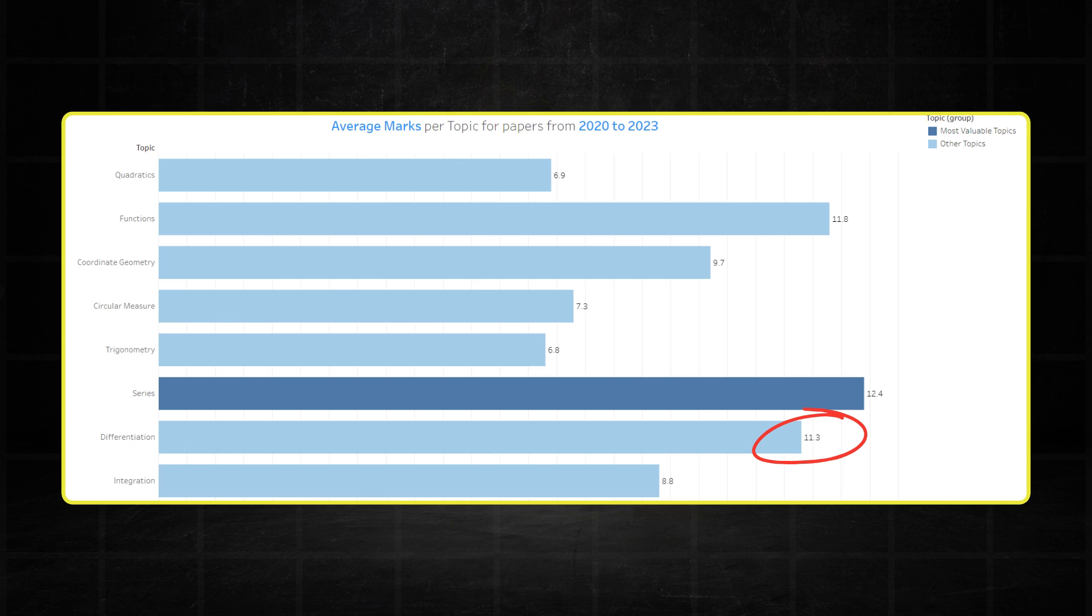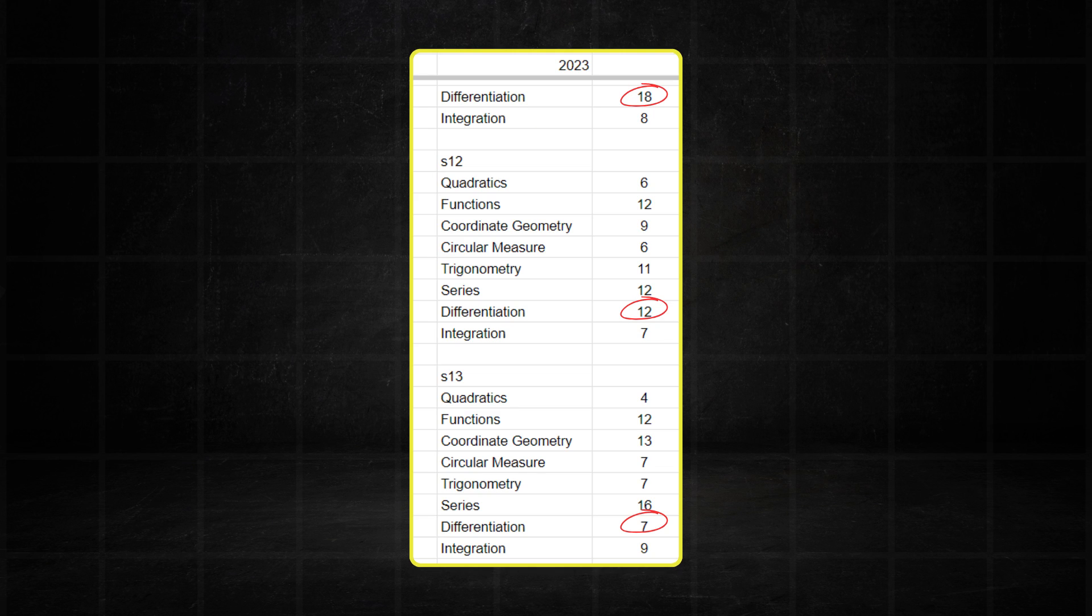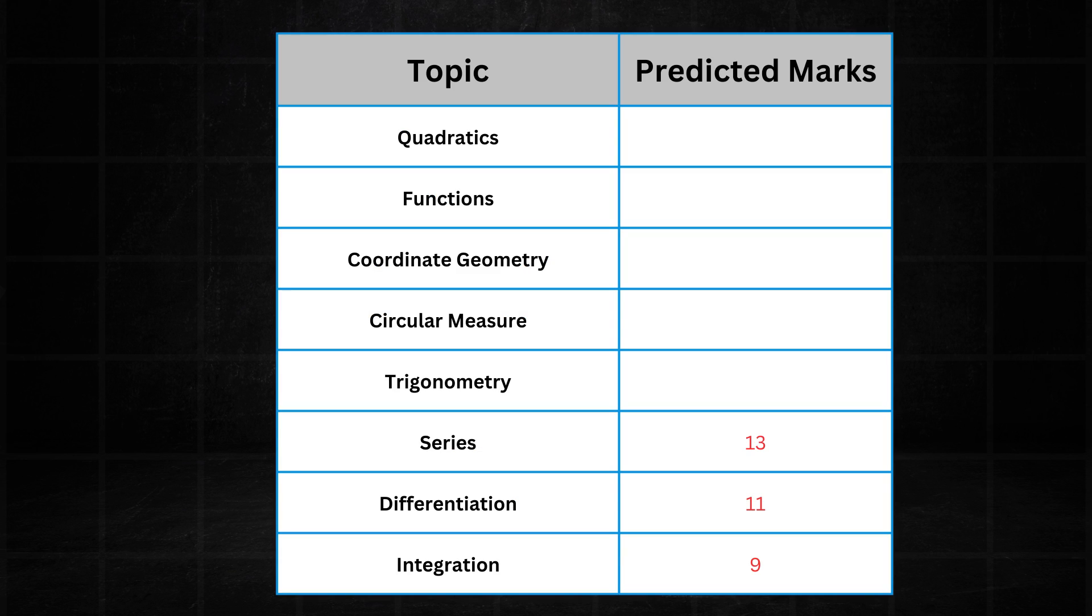Differentiation is a bit of a weird one. It recorded 10 marks which is just slightly below its average of 11.3. But looking at 2023 May, June papers, you can see that it's all over the place. Scoring an absurd 18 marks in variant 1 and then a shocking 7 marks in variant 3. I still do expect it to be around 10-11 marks in May, June as well. But just be cautious because this one is hard to predict.